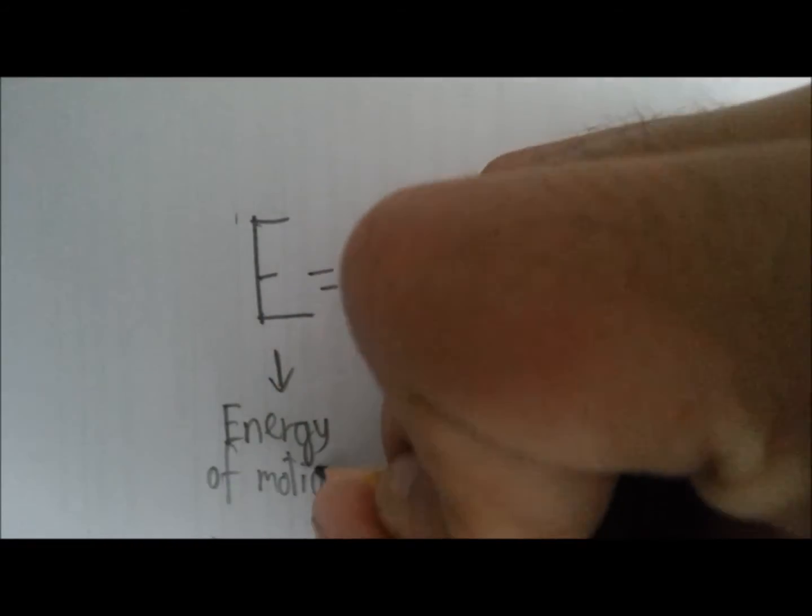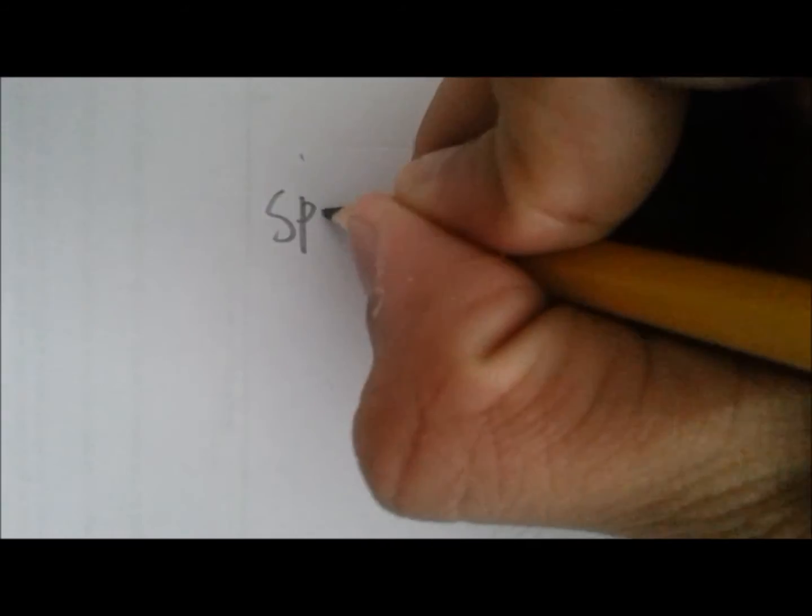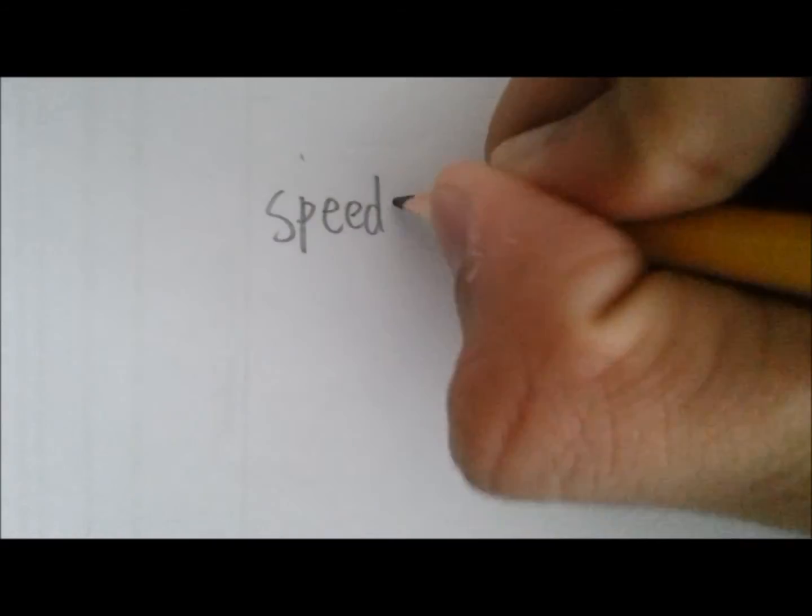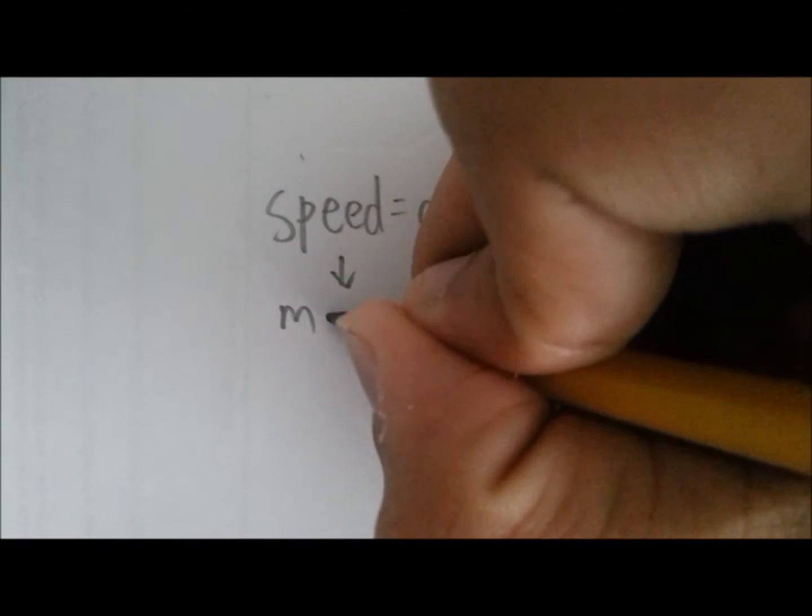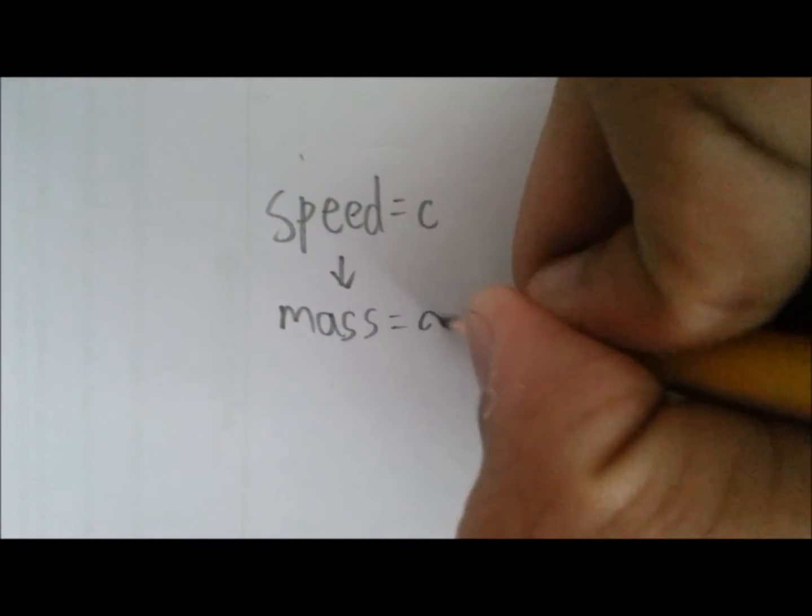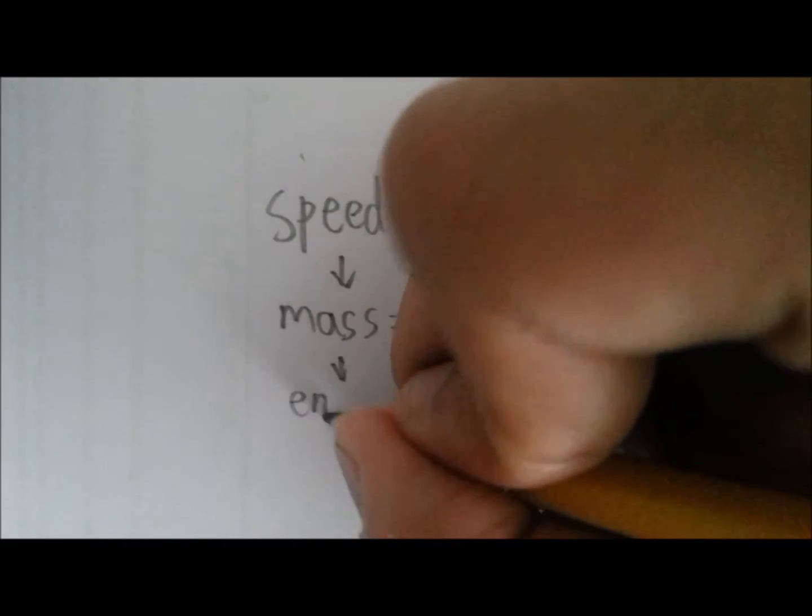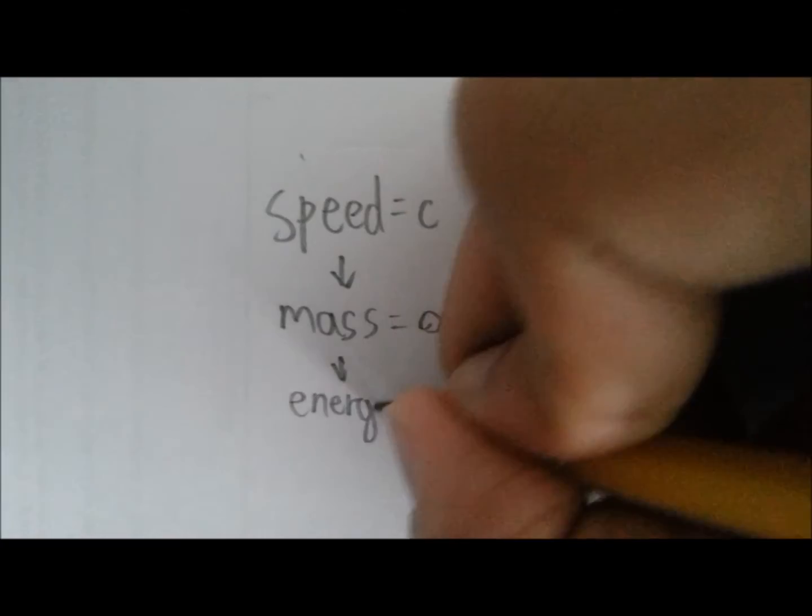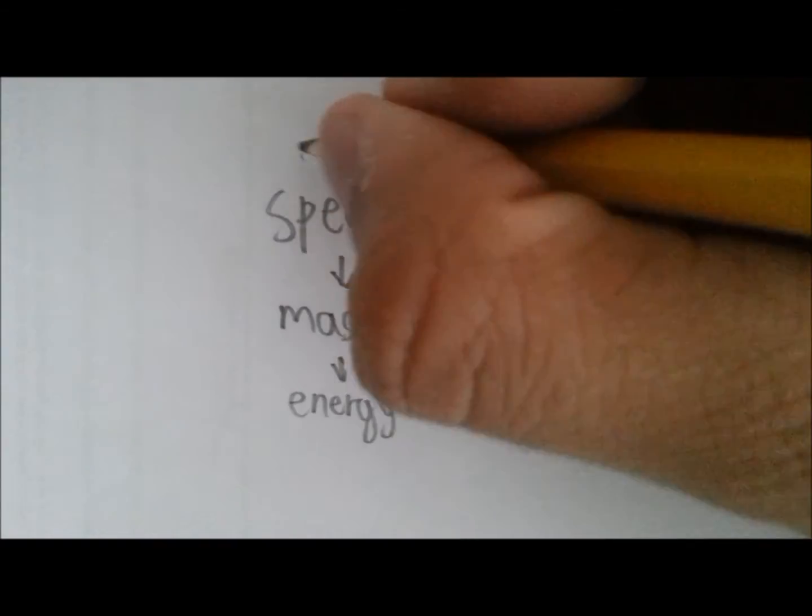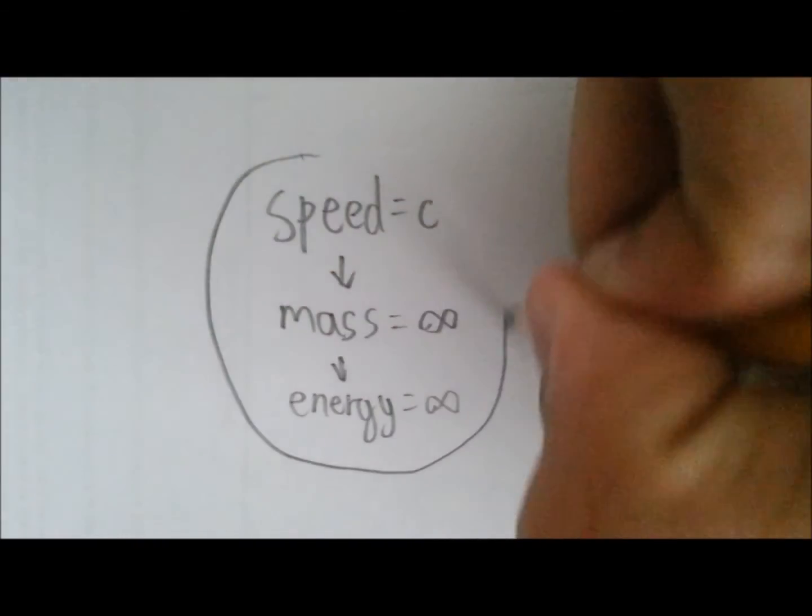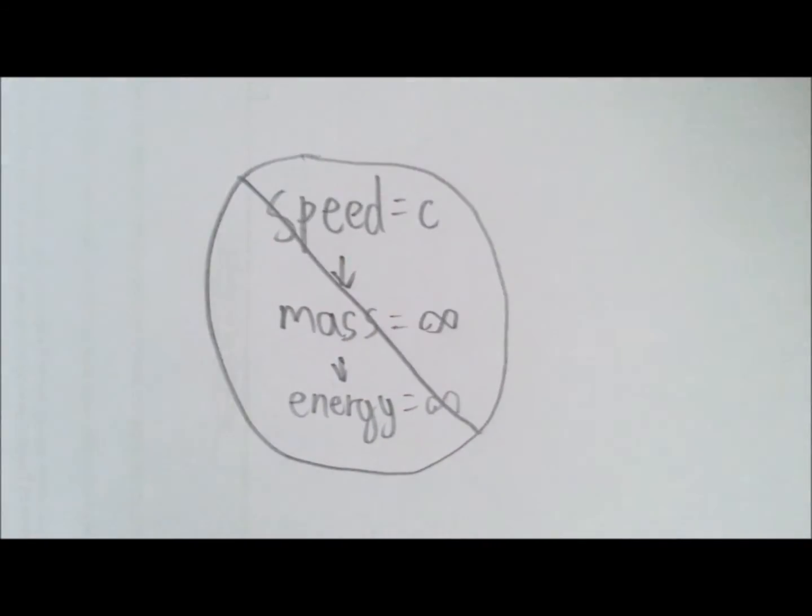This leads to yet another interesting result. For an object with mass, moving at the speed of light is impossible. This is because its mass becomes infinite, but for mass to become infinite, an infinite amount of energy is required. Now, there is only a finite amount of energy, and the law of conservation of energy says that energy cannot be created, but it can only be transformed from one form to another.